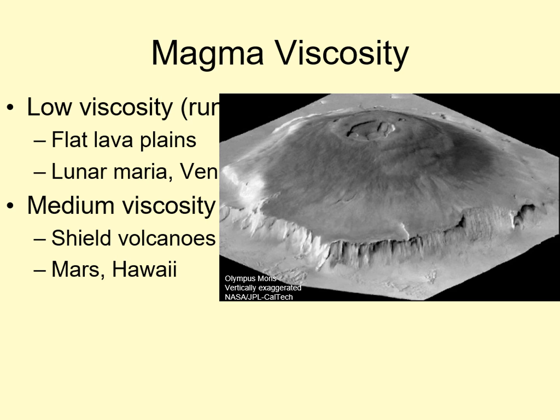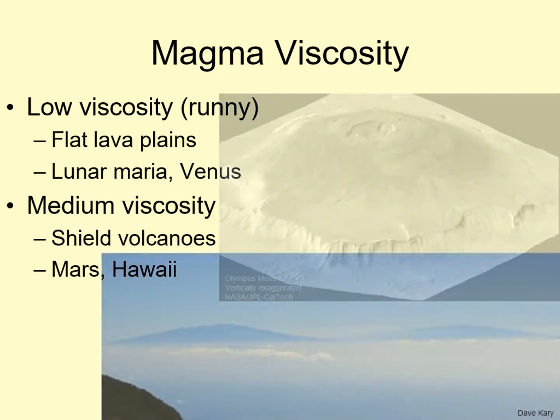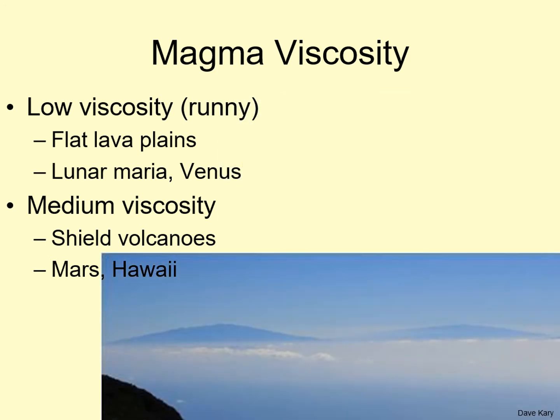Similarly, here on Earth, the large volcanoes in Hawaii — Mauna Kea and Mauna Loa — are shield volcanoes. These are the tallest mountains on Earth when measured from their base, which is far below sea level at the bottom of the Pacific Ocean.